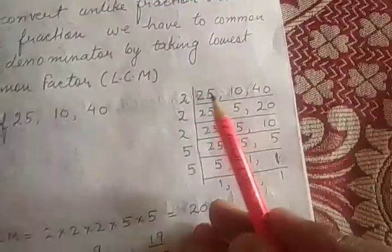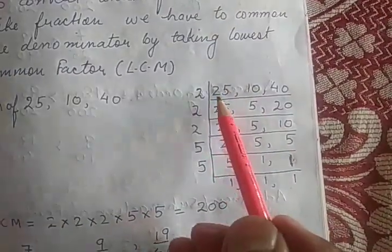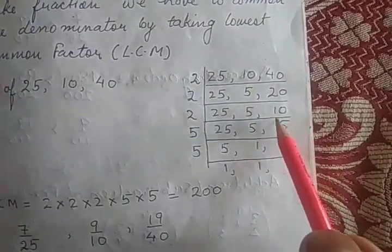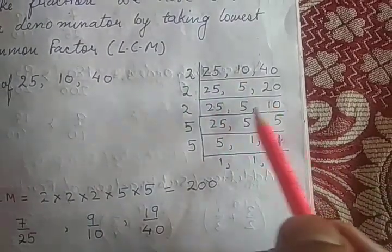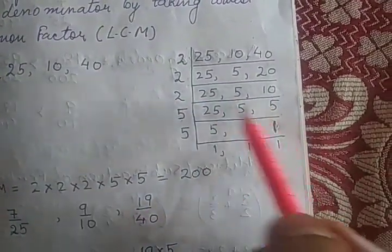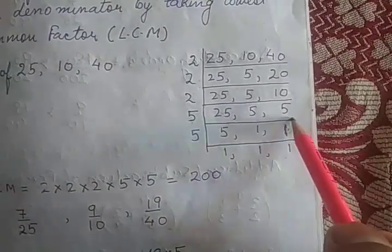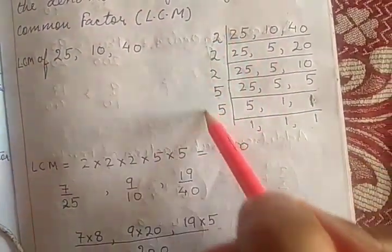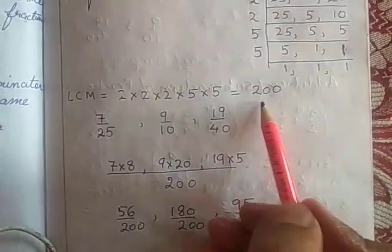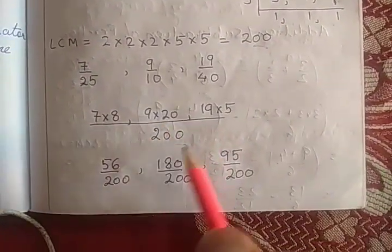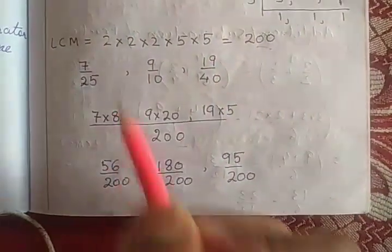To find LCM of 25, 10, and 40: divide by 2 as many times as possible, then take 5. Multiply all the division numbers together to get 200. So 200 will be the common denominator. We are trying to convert unlike fractions into like fractions using the LCM method.